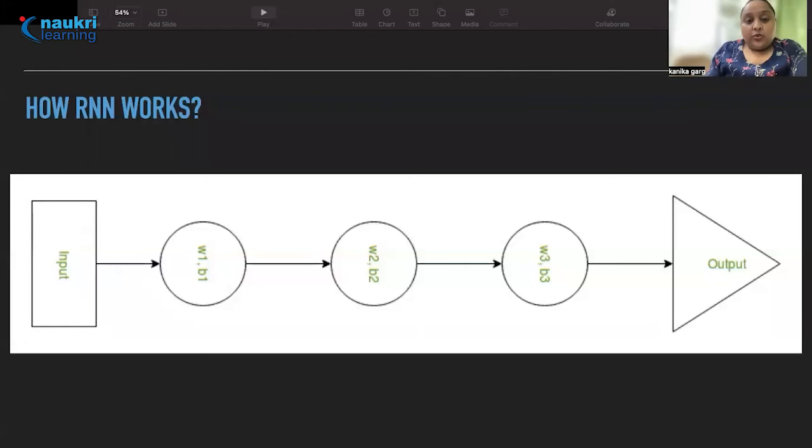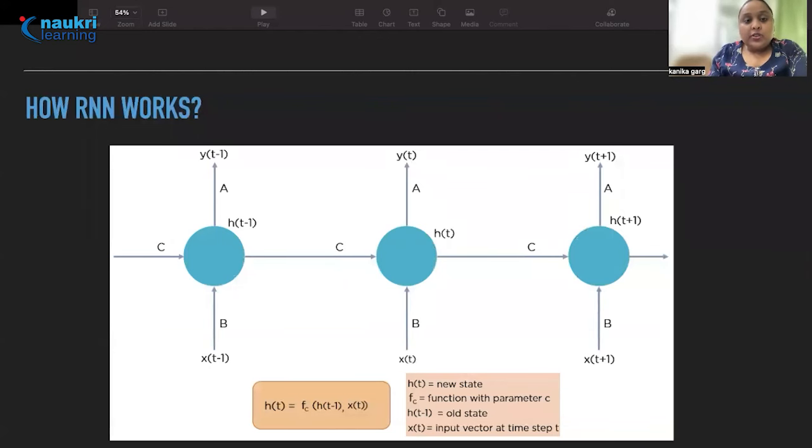Now what exactly RNN will do? As you can see on the diagram, RNN converts the independent activations into dependent activations by providing some weights and biases to all the layers. Thus reducing the complexity of increasing parameters and memorizing each previous outputs by giving each output as input to the next hidden layer. As you can see here also in the middle layer, Ht is getting input from Ht minus one whereas Ht is again an input to Ht plus one. Hence these layers can be joined together such that the weights and bias of all the hidden layers is the same into a single recurrent layer.